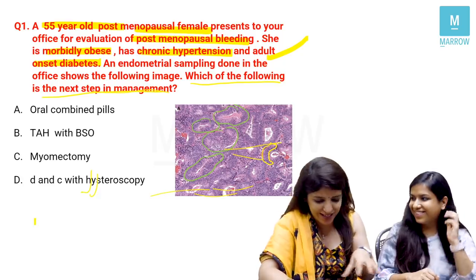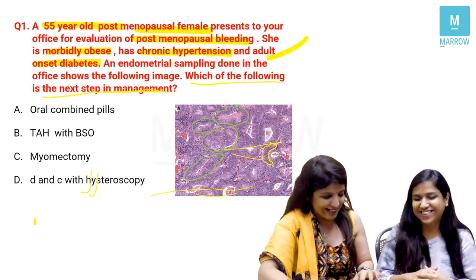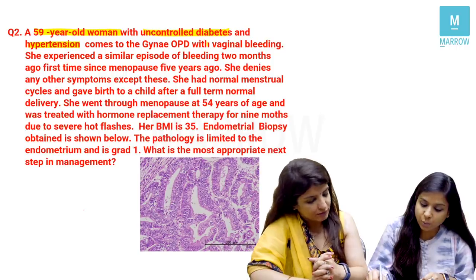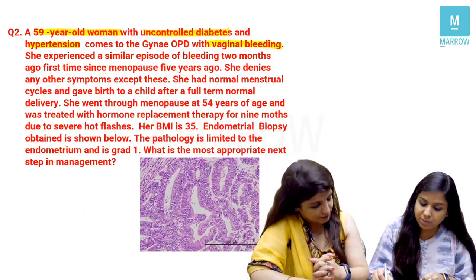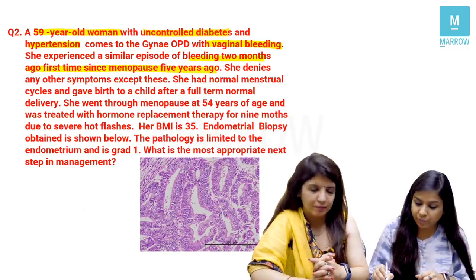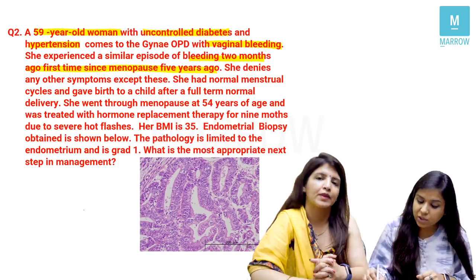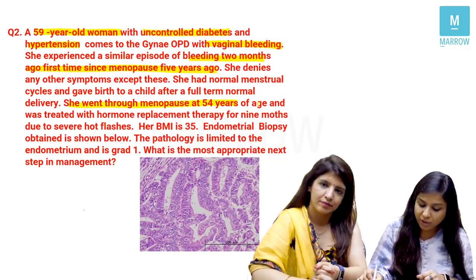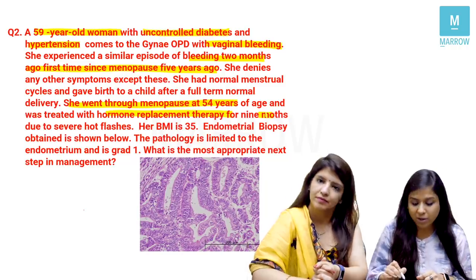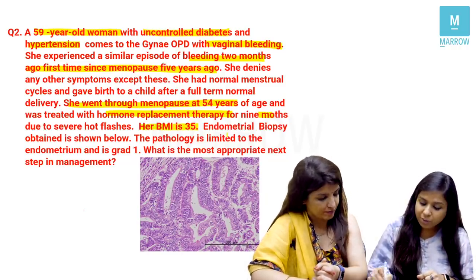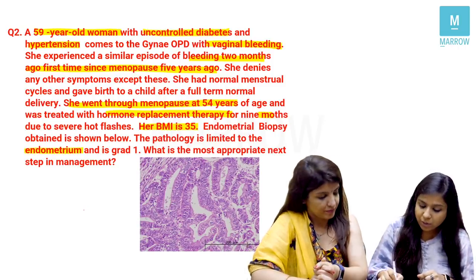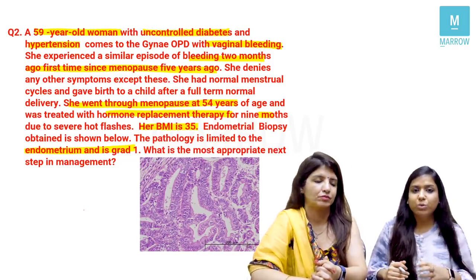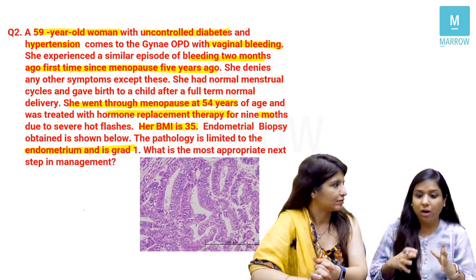Second question: A 59-year-old woman with uncontrolled diabetes and hypertension presents with vaginal bleeding, having had a similar episode two months ago — her first since menopause five years ago. She denies other symptoms. She had normal cycles, one full-term delivery, menopause at 54 years, and received HRT for nine months for severe hot flashes. Her BMI is 35. Endometrial biopsy is shown. Pathology is limited to endometrium and is grade 1. What is the most appropriate next step?